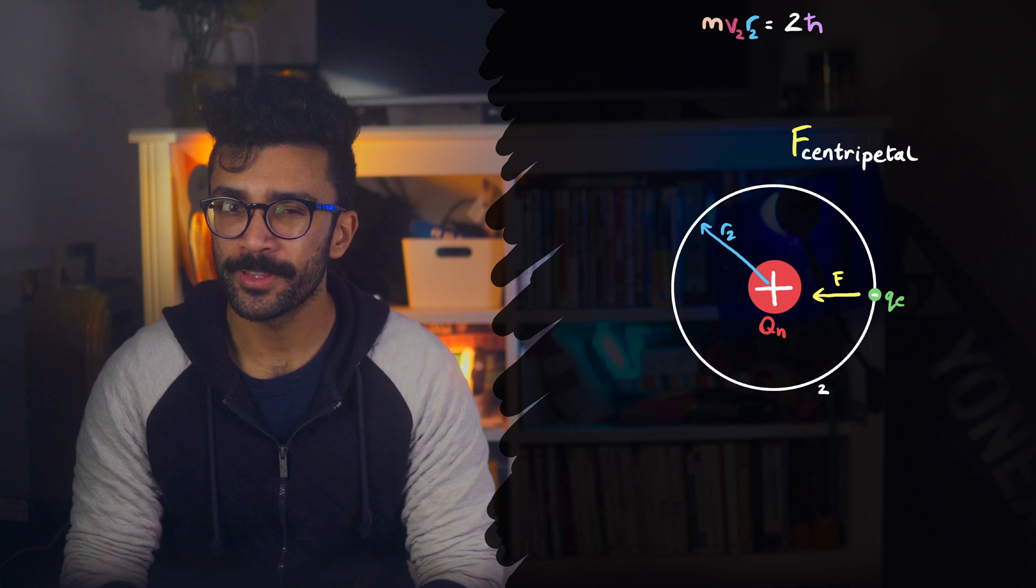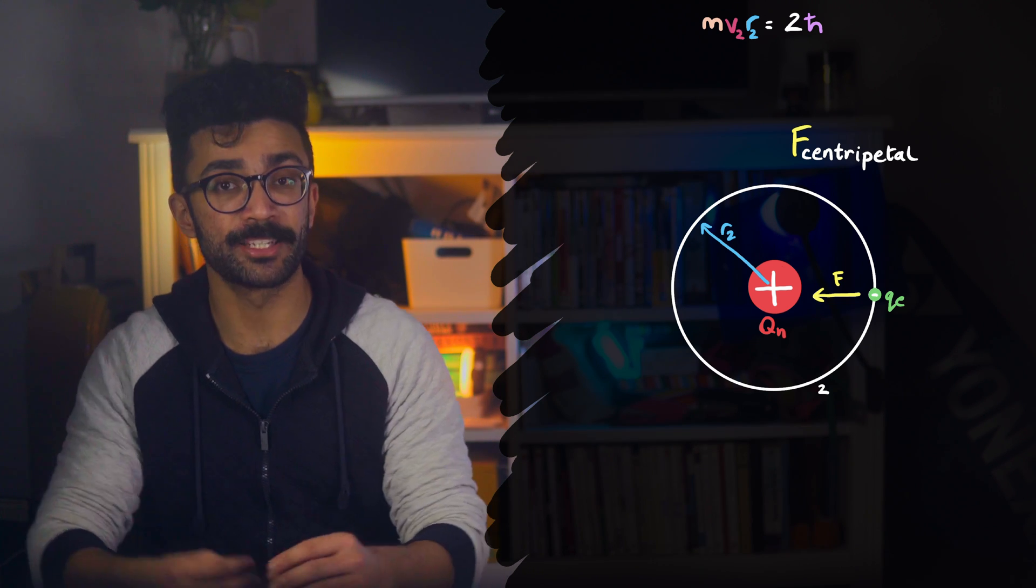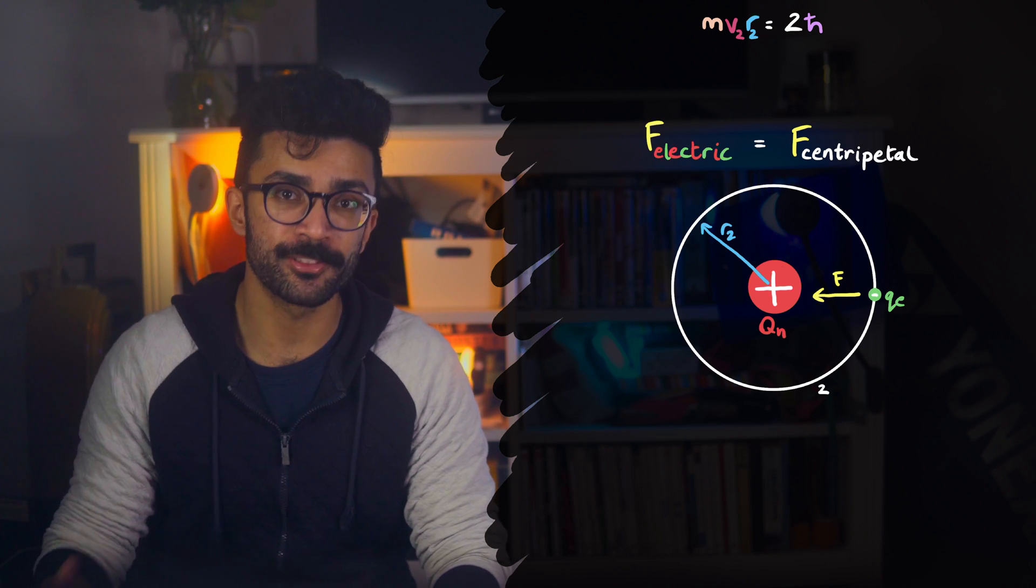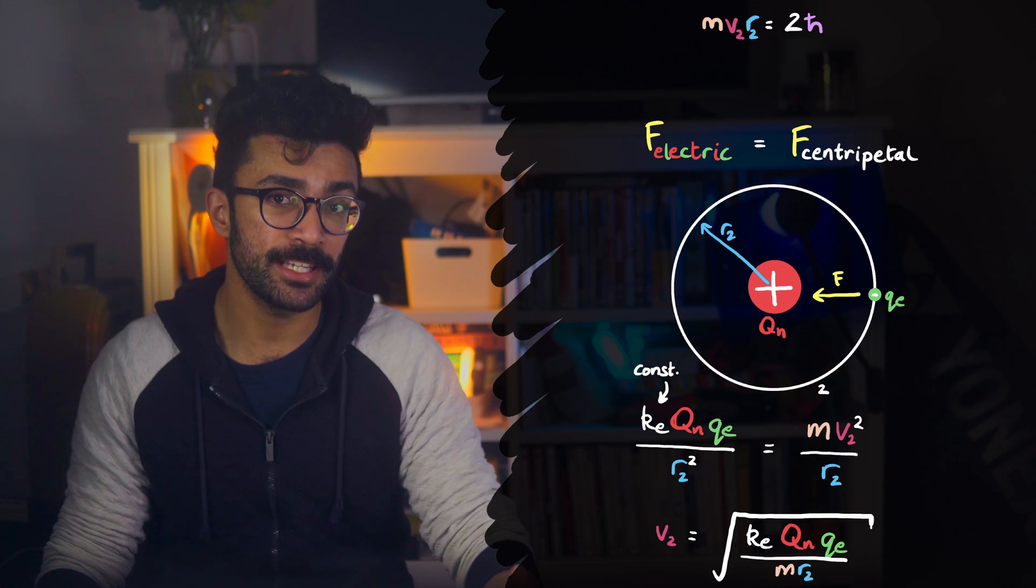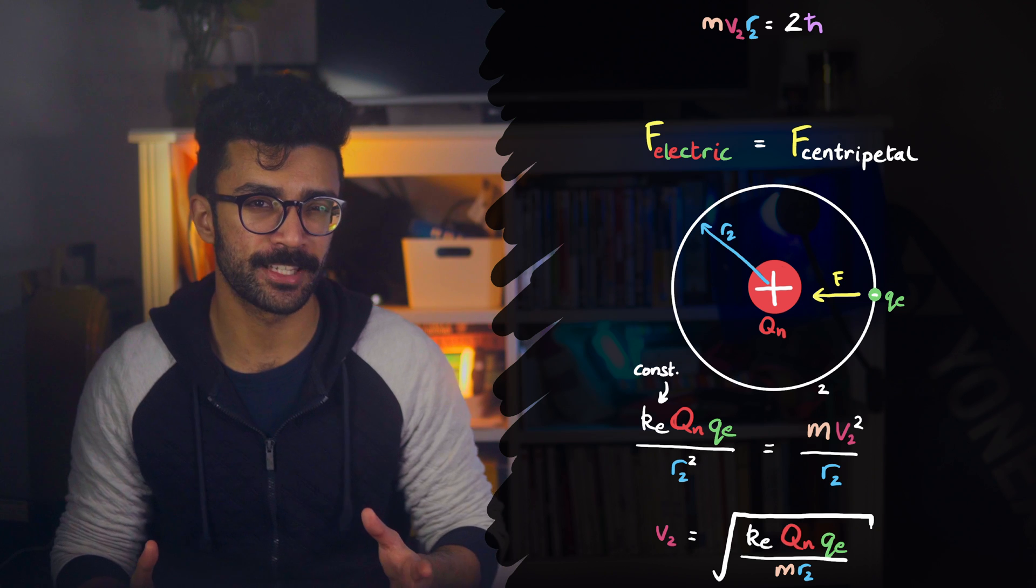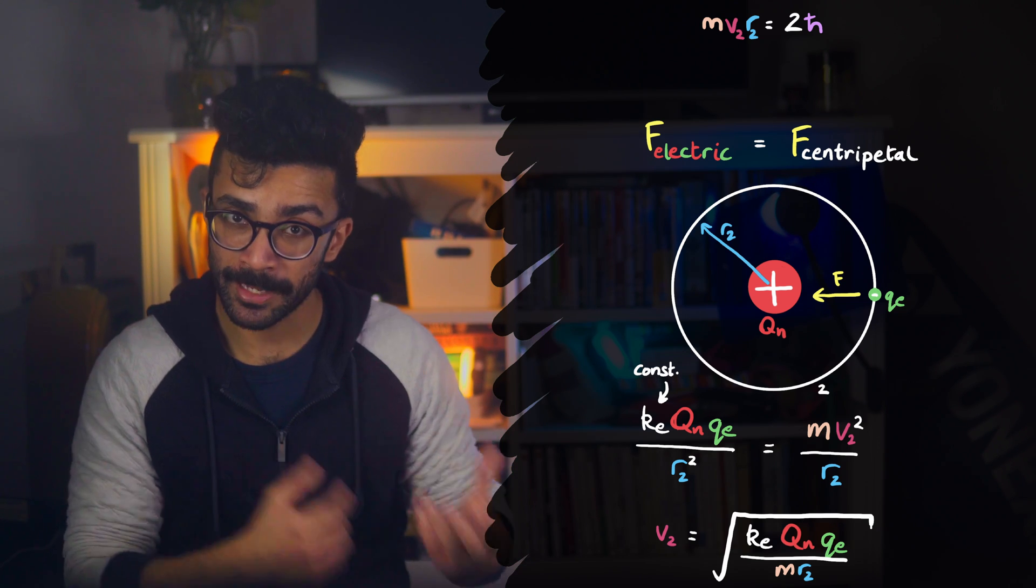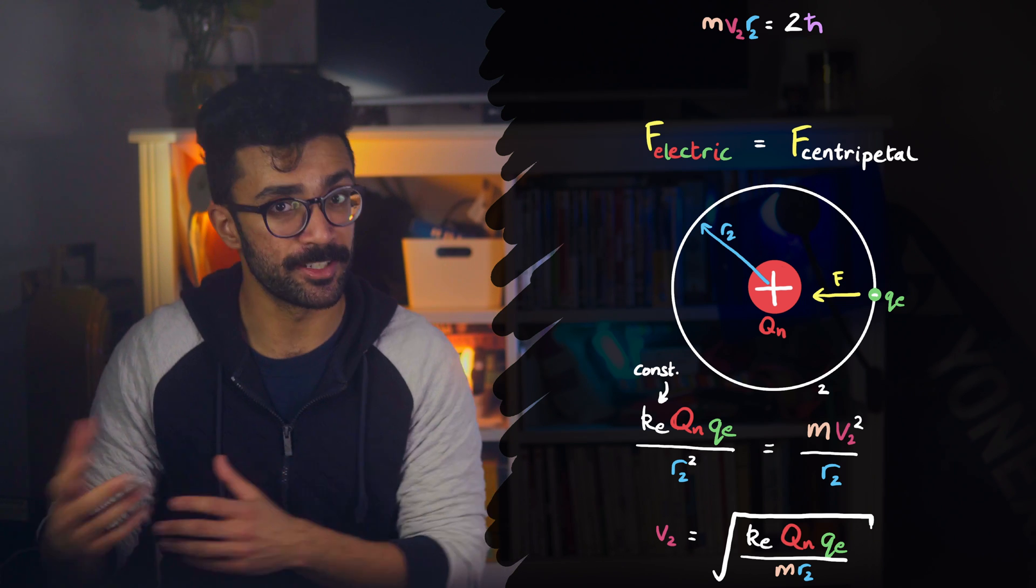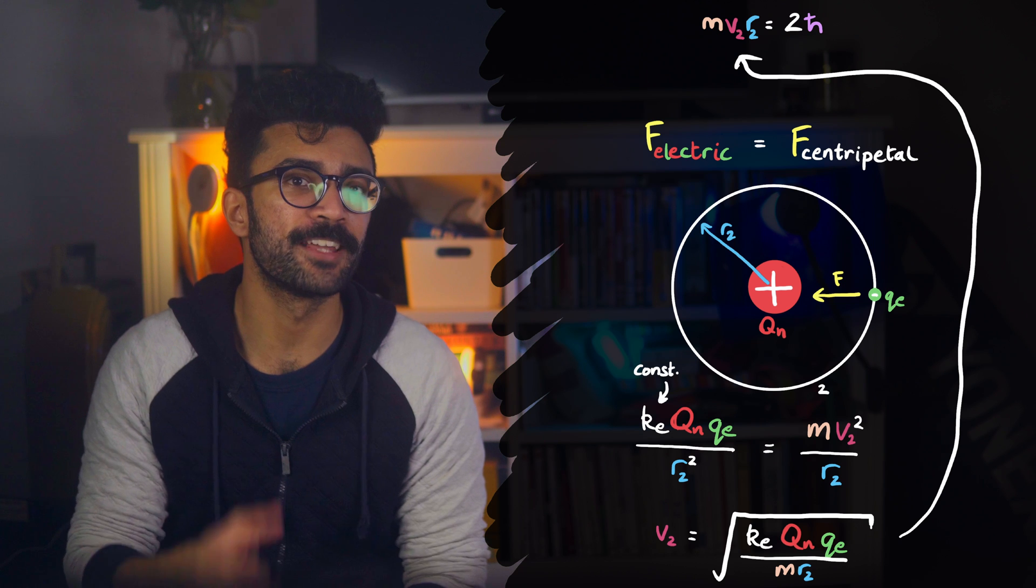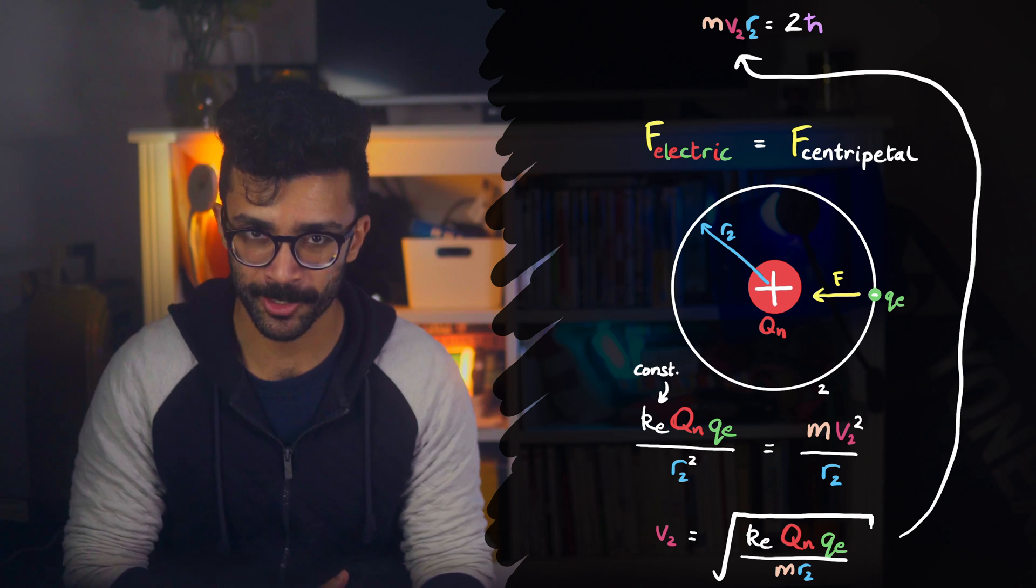So the electromagnetic force caused by our negative electron being attracted to the positive nucleus is equal to the centripetal force. And from this, we can work out the speed at which the electron will move at a particular distance, in terms of things like the charges on the electron and the nucleus, the mass of the electron, and the energy level radius. With a bit of rearranging and substituting, we can then figure out the allowed radii at which electrons can orbit the nucleus in Bohr's model.